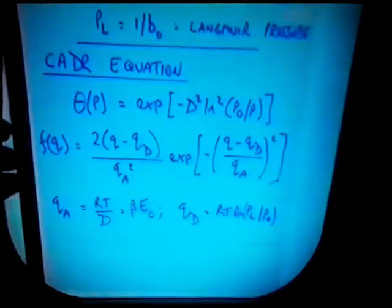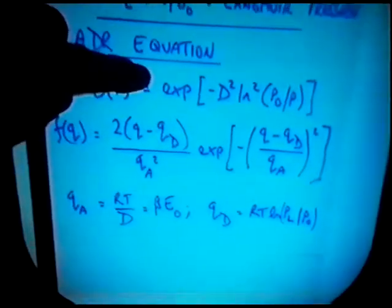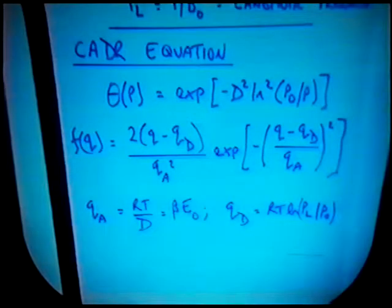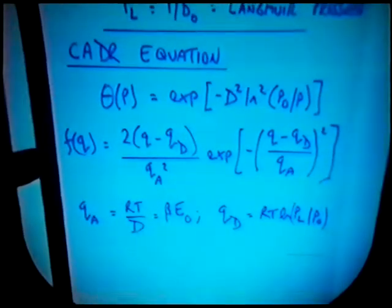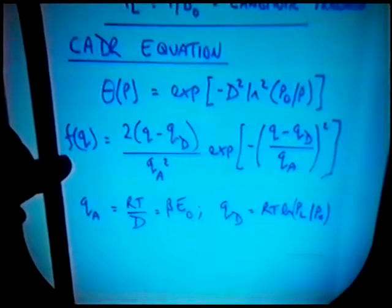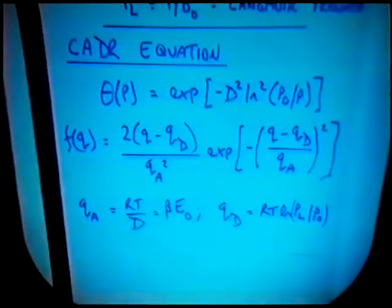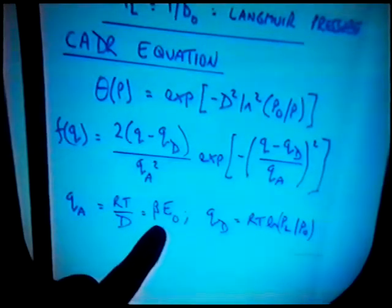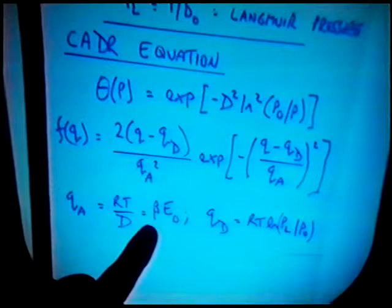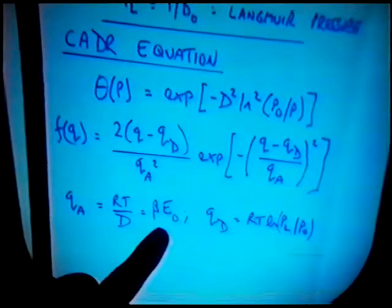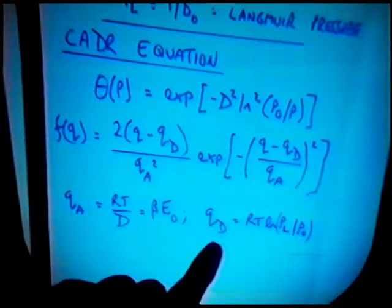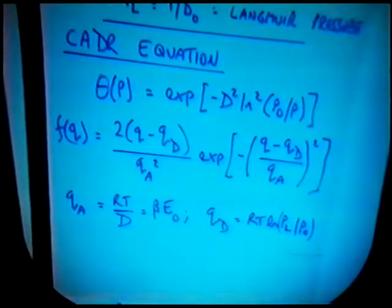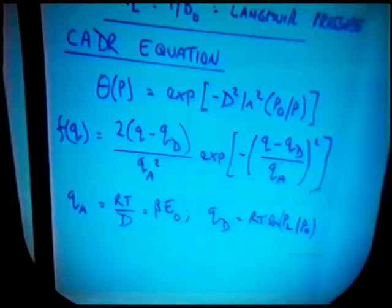For the condensation approximation, the Dubinin-Radushkevich equation can be written in a form where D is the DR constant. Differentiation of this equation, with some transformations, gives a site energy distribution function which is essentially a skewed Gaussian type, where q_a equals RT over D, and is in fact equal to β·E₀ — where β is the affinity coefficient of the Dubinin-Radushkevich approach and E₀ is the characteristic energy — and q_t is the lower bound of the range of values of q, given by RT·ln(p_L/p₀), where p₀ is the saturated vapour pressure.